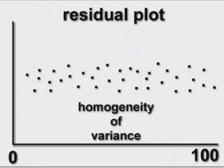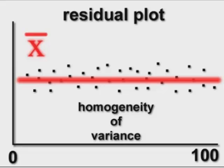Homogeneity of variance is the assumption that our samples all have the same variance. So if you have a residual plot — and remember residuals refer to the error — in this plot the middle line is the mean, and each of the data points refers to how far each data point strays from that mean, that being the residual.